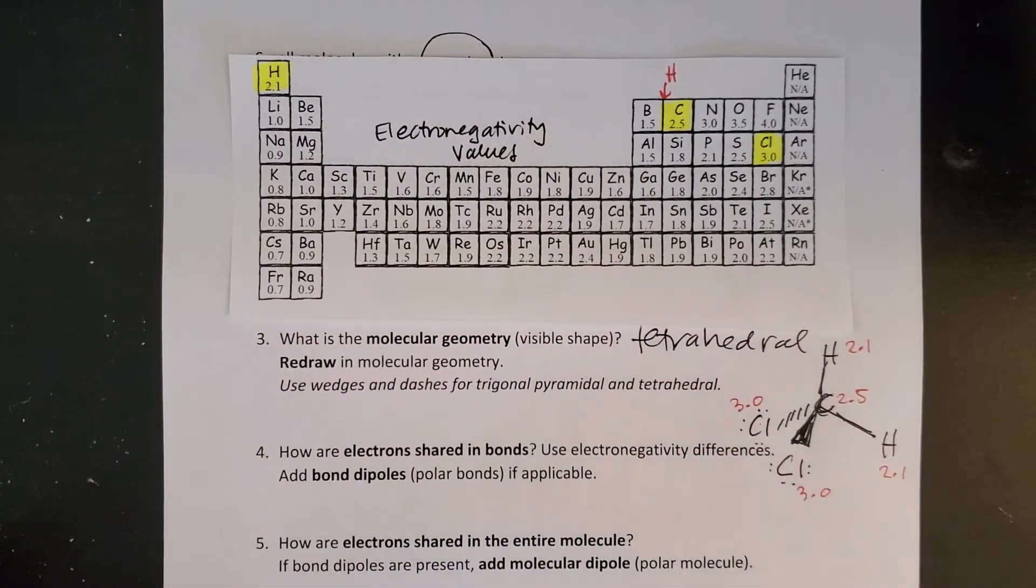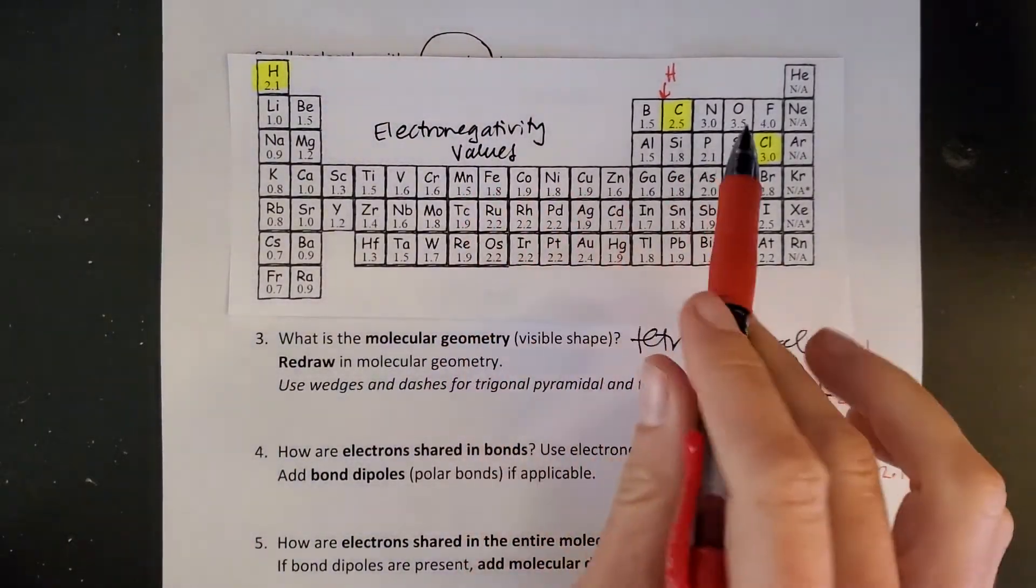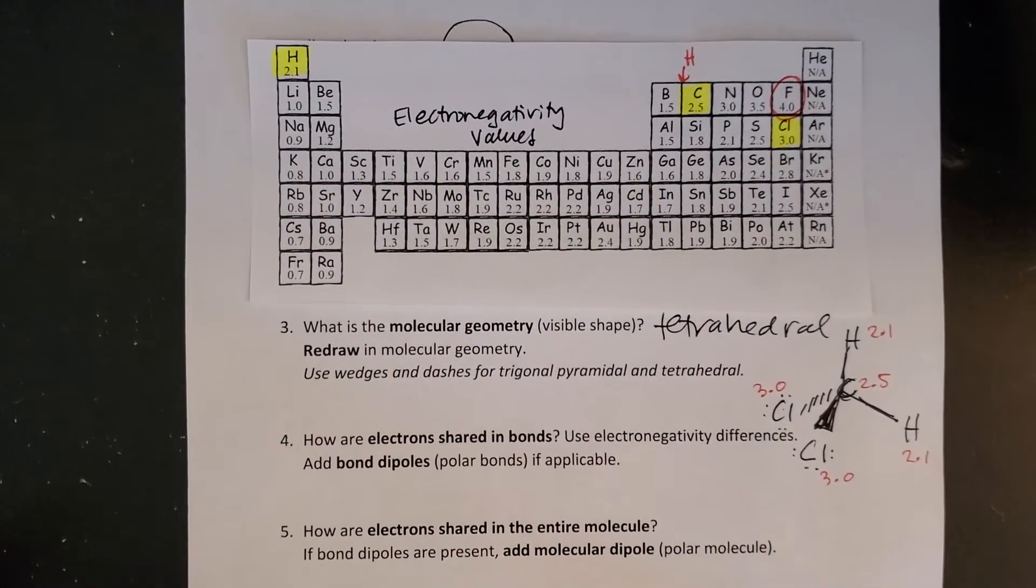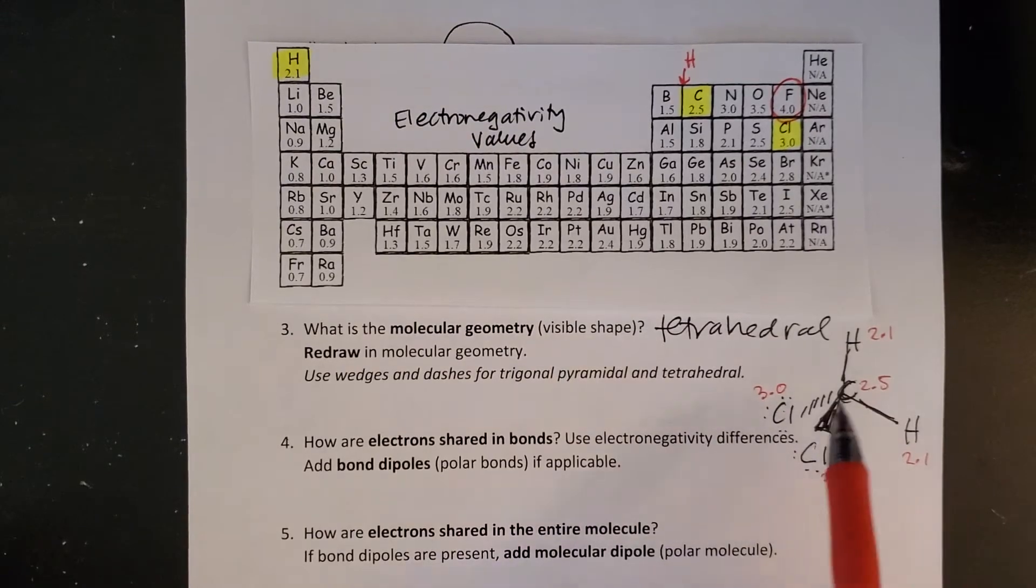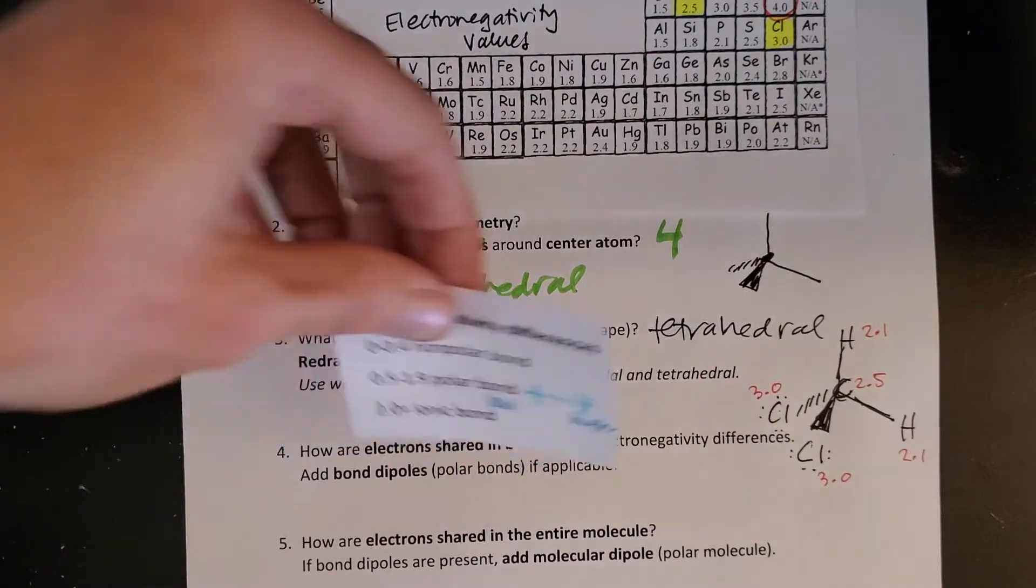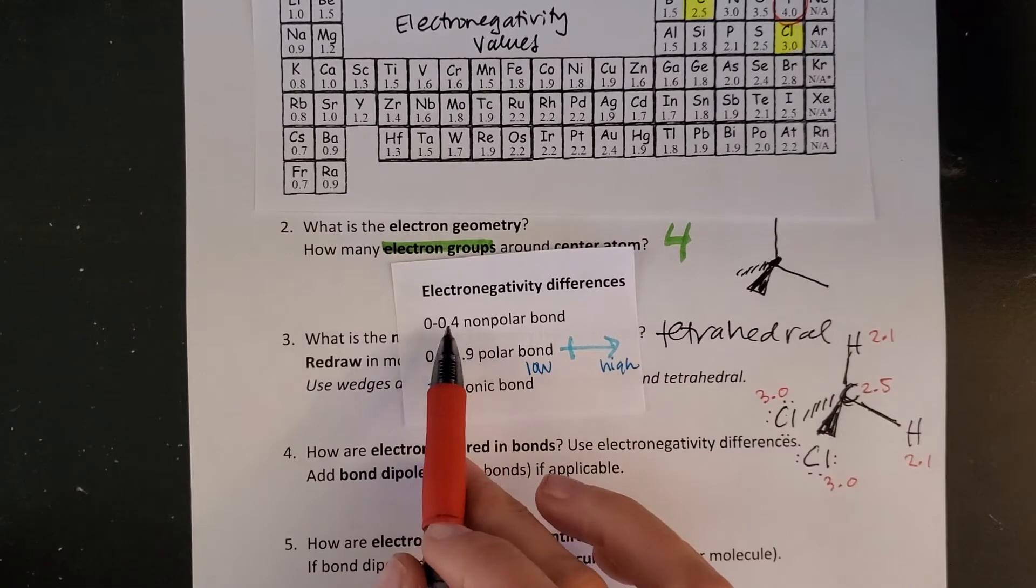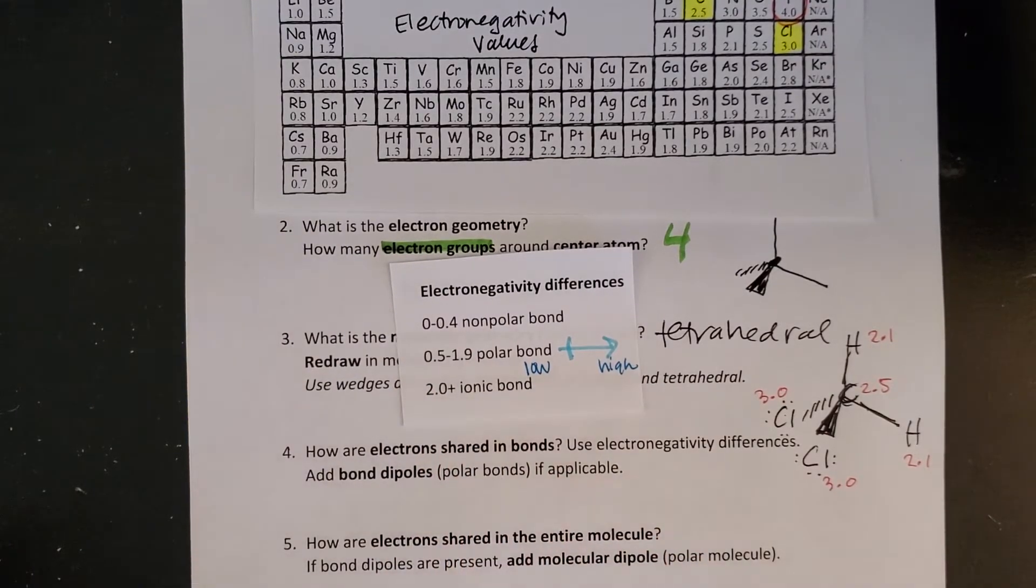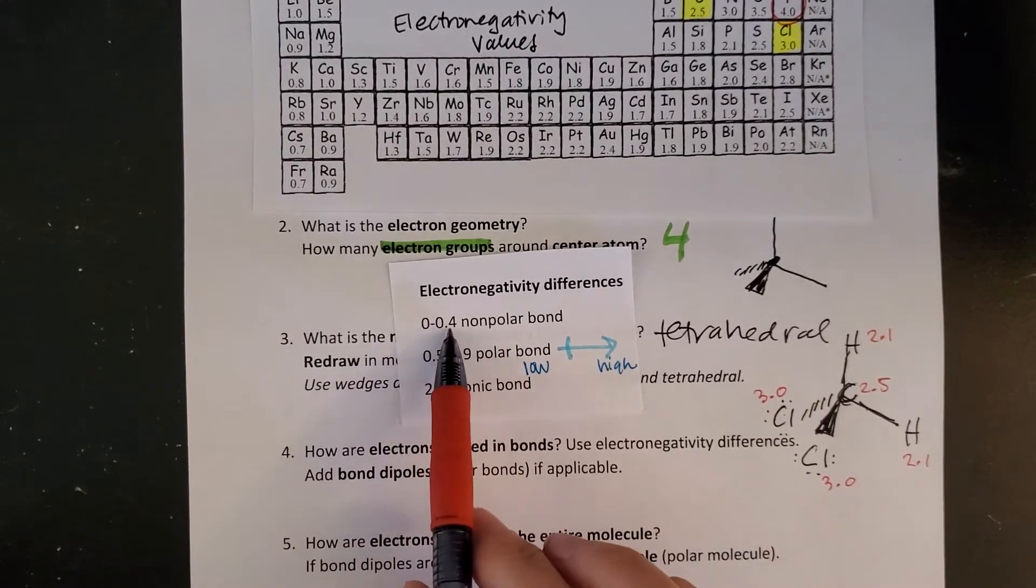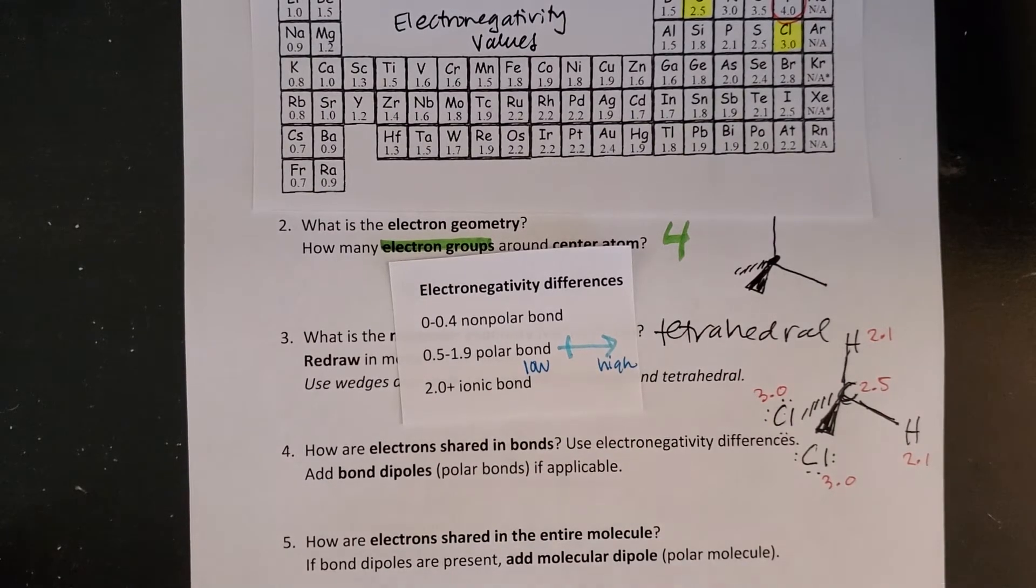Remember electronegativity is the attraction of electrons in a bond that element has. Fluorine has the strongest attraction for electrons in a bond. Now I want to think about what those differences mean. This is actually more of a spectrum but we're dividing with categories to keep the model simple. If my difference is 0 to 0.4 we say that's a non-polar bond, meaning electrons are shared evenly between those atoms.